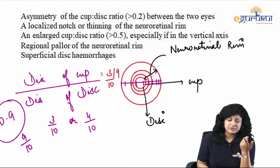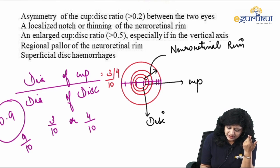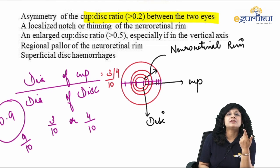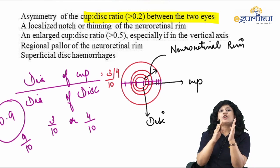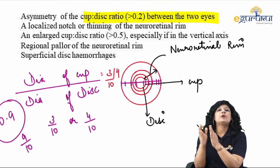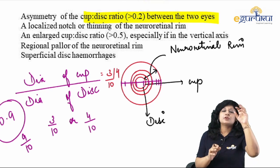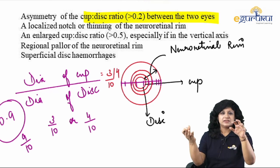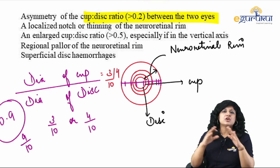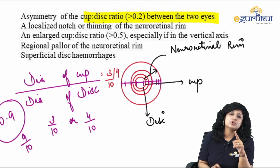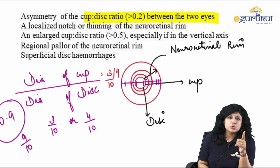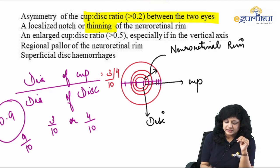There is asymmetry, and asymmetry is significant when there is a CD ratio difference of at least 0.2 between the two eyes. For example, having 0.7 in one eye and 0.8 in the other is not considered asymmetrical. Asymmetry means at least a difference of 0.2 between the two.